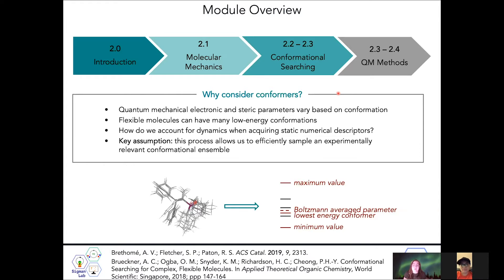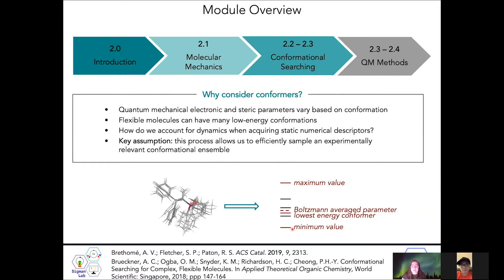How do we really account for dynamics when we're acquiring these static numerical descriptors? One key assumption we make is that through conformational searching, we're able to efficiently sample an experimentally relevant conformational ensemble. One example of how we might consider taking a static numerical descriptor and describe the dynamics of a system is by taking a number of different values from different conformations.